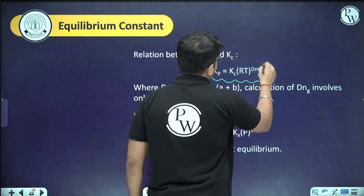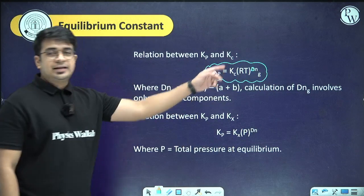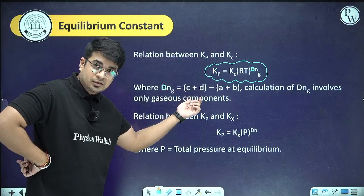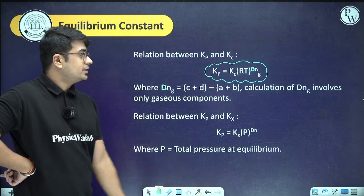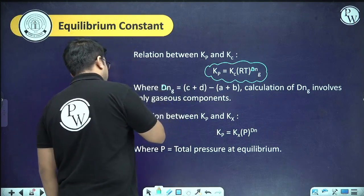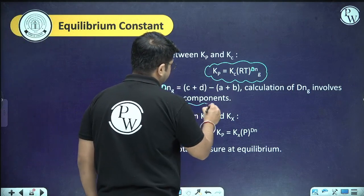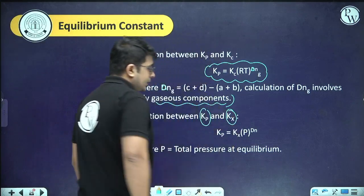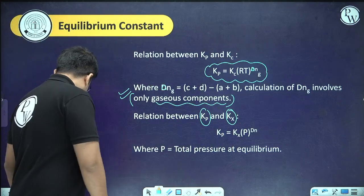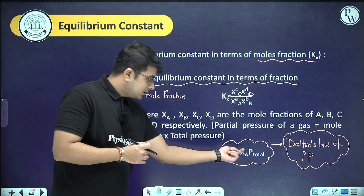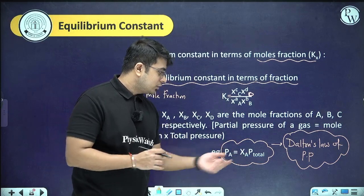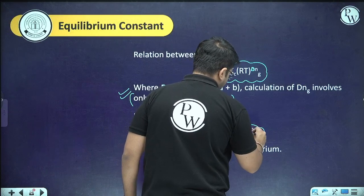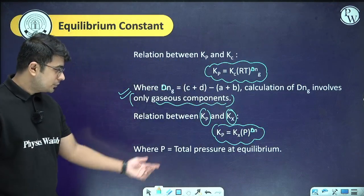The relationship between Kp and Kc is: Kp = Kc × (RT)^ΔNg, where ΔNg = moles of gaseous products − moles of gaseous reactants. This is applicable only for gaseous components. There is also a relationship: Kp = Kx × P^ΔNg, where P is the total pressure.